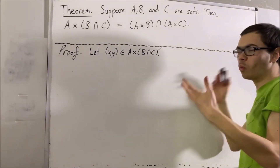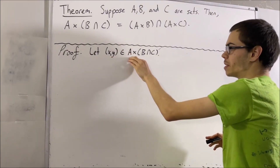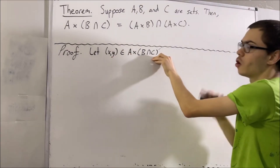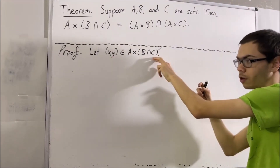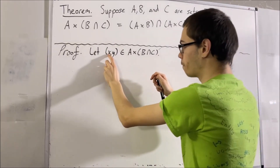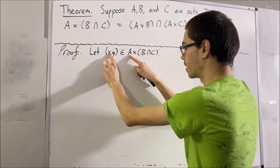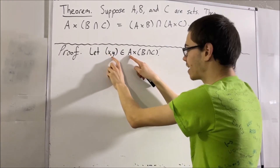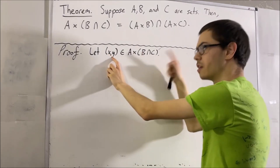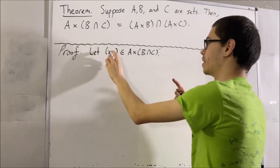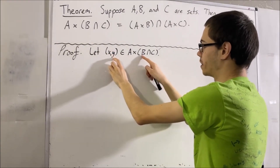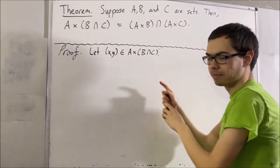So what does it mean for an ordered pair to be an element of a Cartesian product? Well, if you recall, the first coordinate is an element of the first set, and the second coordinate is an element of the second set. So we know that X is an element of A, and Y is an element of B and C.